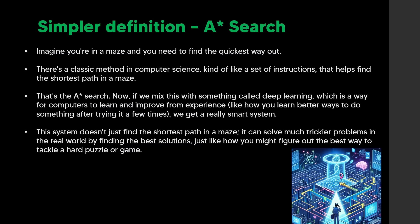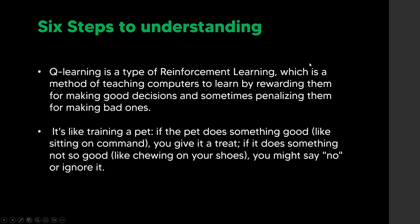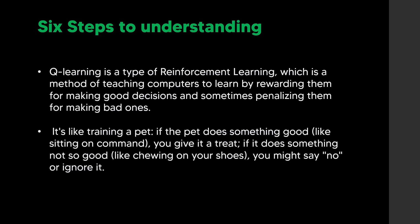Now let's look at six steps to understanding Q-Learning. Overall, Q-Learning is basically like training a pet: if the pet does something good, like sitting on command, you give it a treat; if it does something bad, like chewing on your shoes, you say no. You reward good decisions and penalize bad ones — that's how reinforcement learning works.